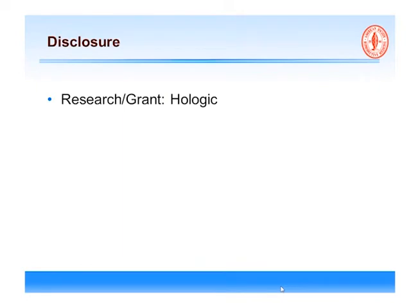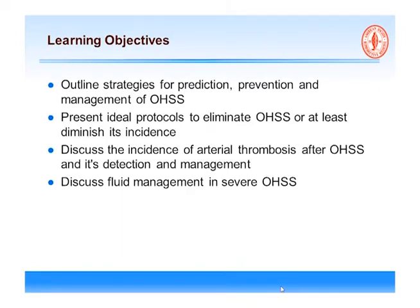I will discuss prediction, prevention, and management, including how to eliminate OHSS, and will cover management in great detail. Two very important areas are prevention and management of arterial thromboembolism. The clots that happen with OHSS are not the typical GYN/obstetrics problem of pelvic thrombosis throwing emboli to the lung. The majority — two-thirds — are arterial thromboembolism, most commonly in the middle cerebral artery or branches of the carotid arteries.